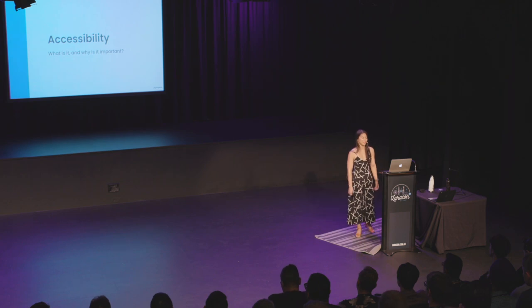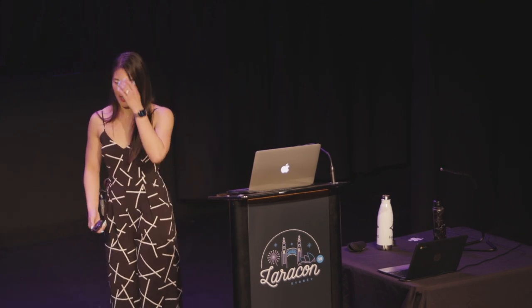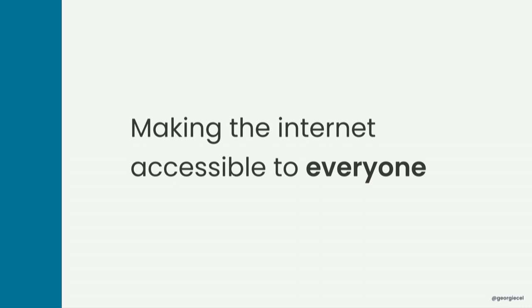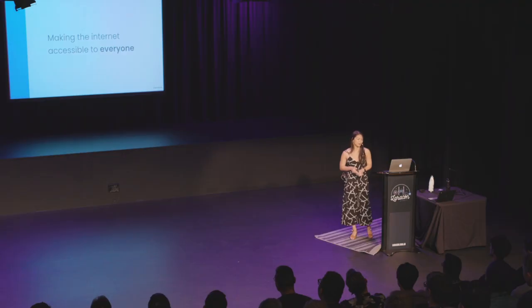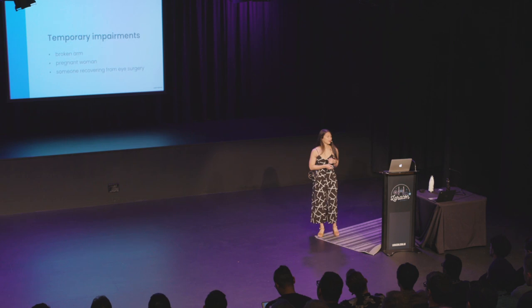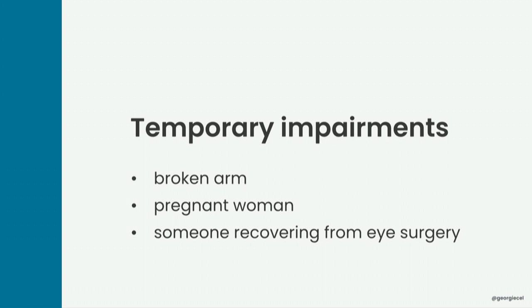When most people think of accessibility, they think of people with visible and invisible disabilities, including but not limited to blindness, deafness, autism, Alzheimer's, dyslexia, and making experiences more accessible to them. But accessible design in the context of the web is not just about making websites accessible to these people — it's about including these people and making the internet accessible to everyone. This means not only permanent impairments, but temporary ones, such as a broken arm, a pregnant woman, or someone recovering from eye surgery.